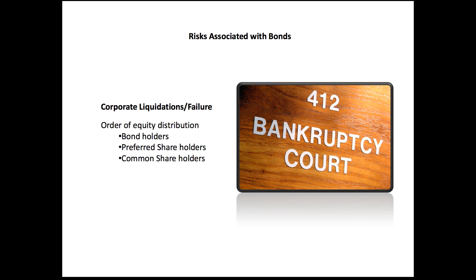Let's assume you're holding a bond for a company that actually fails and goes through bankruptcy — as happened with General Motors in 2008-2009. When that happens, the order of distribution for the equity remaining in the company is: bondholders receive their money first, then preferred shareholders, then common shareholders. Since Unit 1 covered common shares, you'd be last in line. Bonds carry much lower risk than common shares because if something bad happens, you're first to receive payment if any money remains.